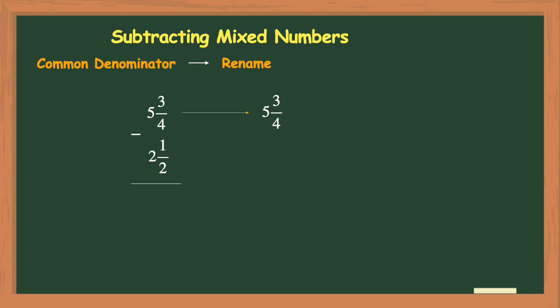Now looking at 2 and a half I will need to multiply my denominator of 2 by 2 to get that common denominator of 4. I will also need to multiply the numerator by 2 as well. Remember that whatever you do to the denominator you must do the exact same thing to the numerator. So 2 and a half will be renamed to its equivalent of 2 and 2 fourths.